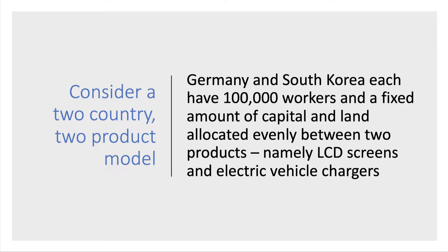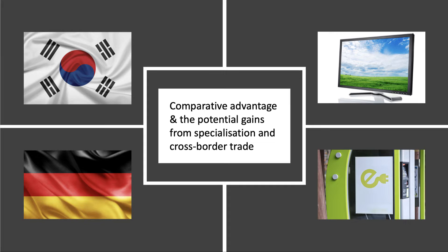Let's consider two countries: Germany and South Korea. Each have a hundred thousand workers and a fixed amount of capital, land, and other inputs allocated evenly initially between two products: LCD screens and electric vehicle chargers. This is a classic example of two countries who in theory might gain from specialization first, and then from trade in two products across borders.